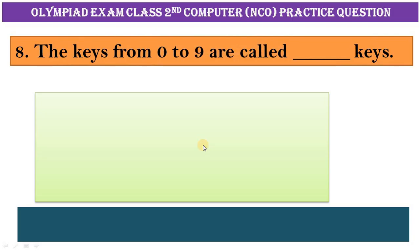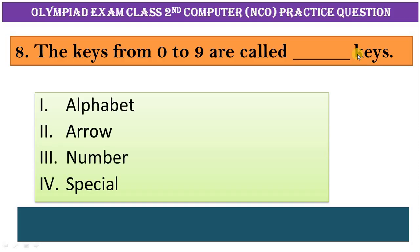Question number eight: the keys from zero to nine are called dash keys. Alphabet, arrow, number, special. Correct answer is option third, number.